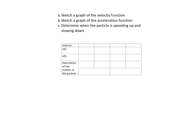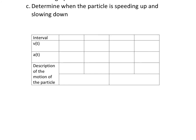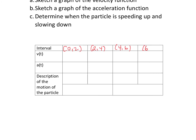We want to sketch a graph of the velocity function, sketch a graph of the acceleration function, and then determine where the particle is speeding up and slowing down. We have a table here with the intervals we want to check. We're going to check zero to two — square bracket at zero because it's included but two is not — then two to four, four to six, and then six to eight.